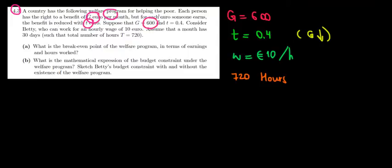Suppose that the benefit is 600 euros and t is equal to 0.4. Suppose we have Betty who works for a wage of 10 euros. Assume that the total number of hours in a month is 720.